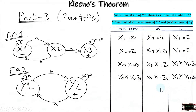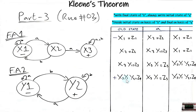To form FA3, we decide which states are initial and which are final. The first state is always the initial state. The final state is decided on the basis of y: we decide the initial state based on x and the final state based on y. Where y2 appears is our final state, and y2 only comes in z4, so z4 is our final state. Now we will draw FA3.